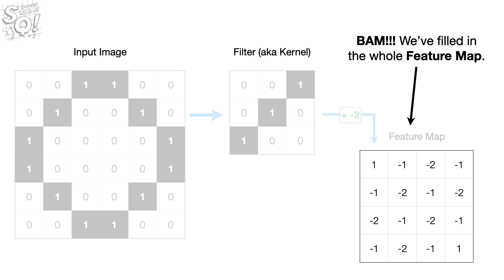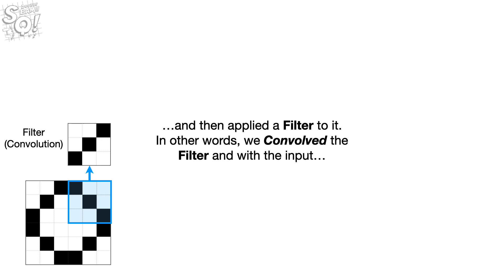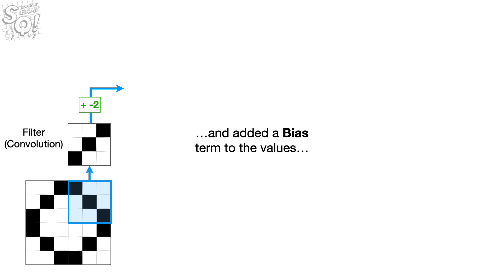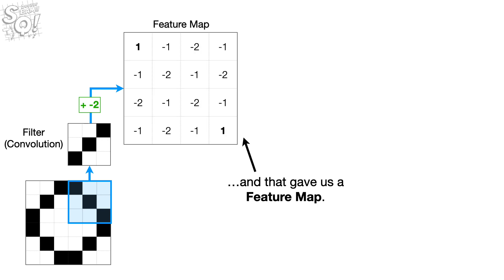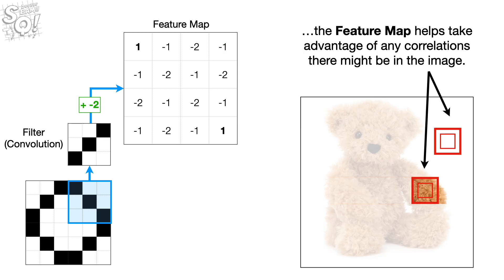We filled up the whole feature map. To summarize, we started with an input image of the letter O, then applied a filter to it — in other words, we convolved the filter with the input — and added a bias term to the values, and that gave us a feature map. Because each cell in the feature map corresponds to a group of neighboring pixels, the feature map helps take advantage of any correlations there might be in the image.